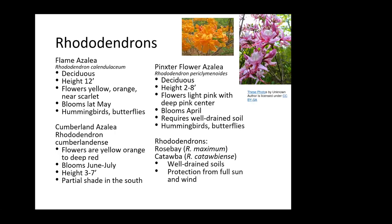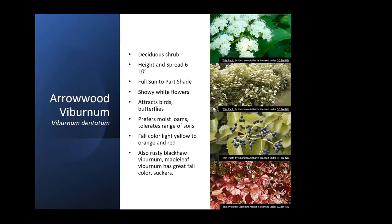Viburnums — there are two or three native to Kentucky. These are deciduous shrubs that get a height and spread of six to ten feet, can take full sun to part shade, and some have showy white flowers. They have berries that attract birds, flowers that attract butterflies, and most prefer a moist loam type of soil. Some have very good fall color — the maple-leaf viburnum has great fall color. Some of these shrubs that like moister soils do sucker, so you have to do a little sucker control, but they make a nice shrub border.